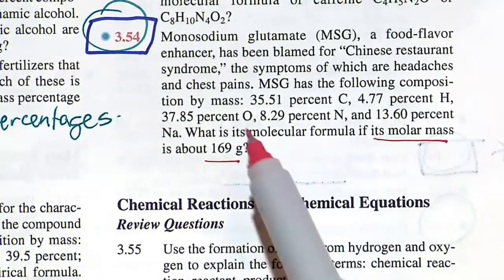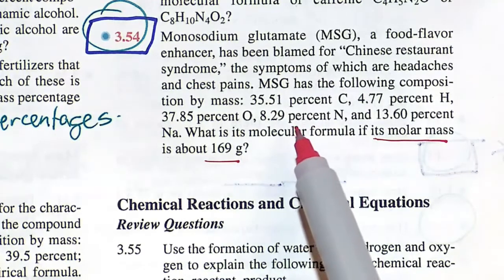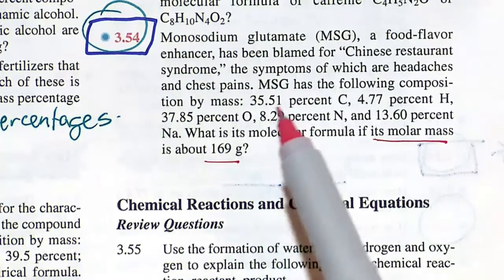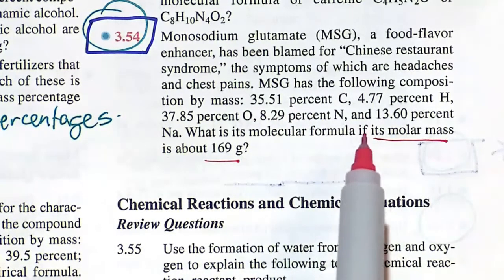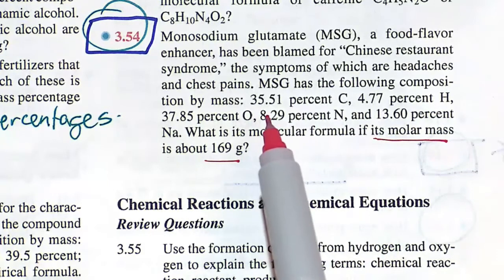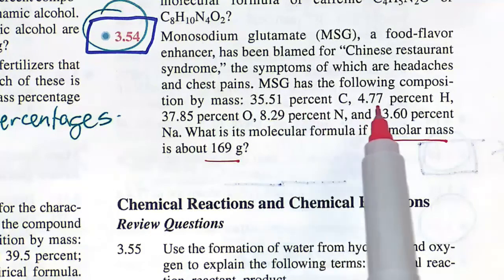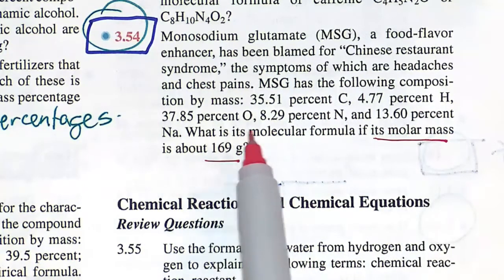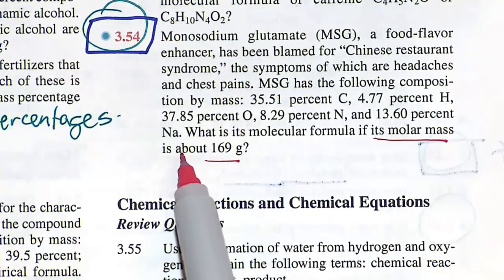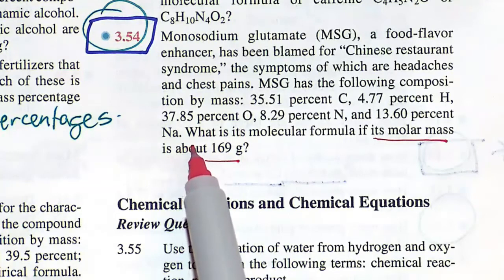Well, assuming that all of these percentages add up to 100, and they actually do, we can assume and go ahead and say that instead of 35.51% carbon, because all of these add up to 100%, we actually have 35.51 grams of carbon, 4.77 grams of hydrogen, this many grams of oxygen, this many grams of nitrogen, and finally that many grams of sodium.